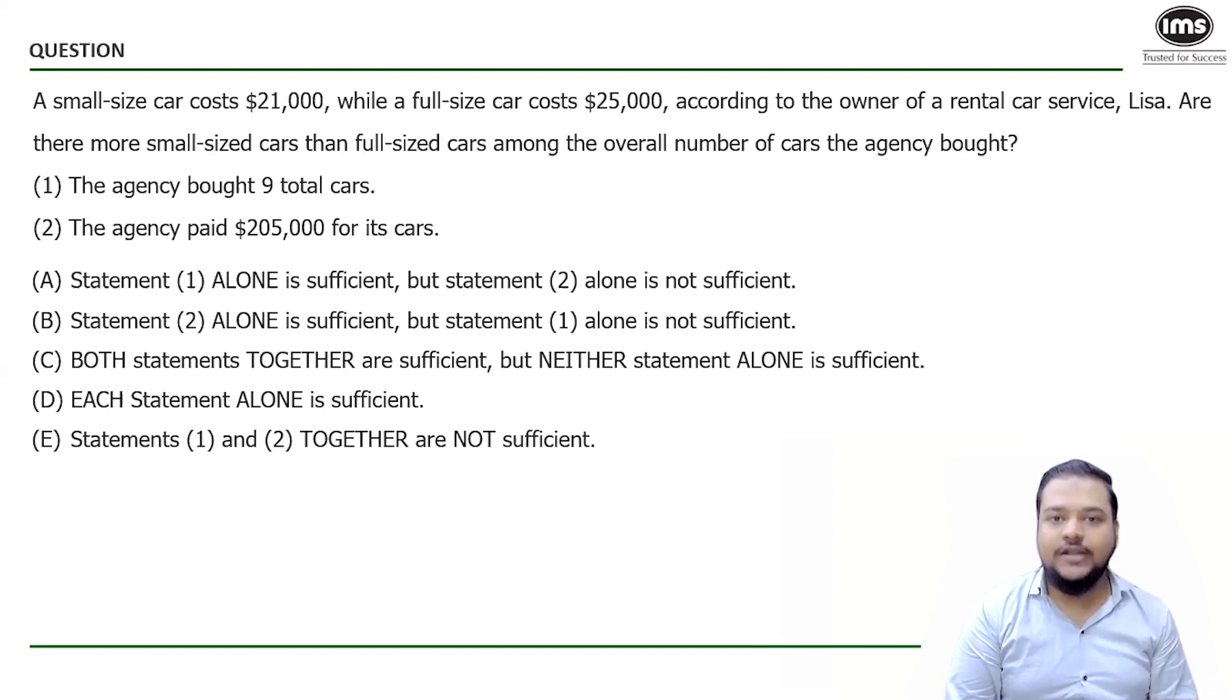I'd like to give you a shorthand representation to remember them really well. Option A will be correct when statement one alone is sufficient but statement two alone is not sufficient to answer my question. Option B will be correct when statement one alone is not sufficient to answer the question but statement two alone is sufficient.